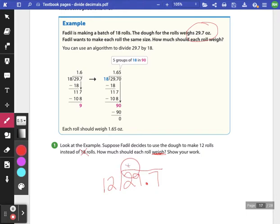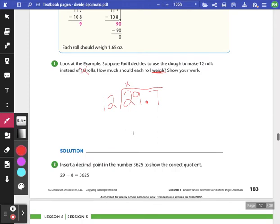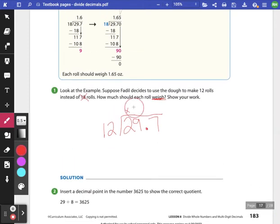So I know that 12 cannot go into 2. It can go into 29 two times, which is 24 – I have 5 left over. I'm going to bring down my 7. I know that 12 can go into 57 four times, 9 left over. Last year in fifth grade, you would say the answer is 24 remainder 9, but no more. We are going to add a zero and continue working.